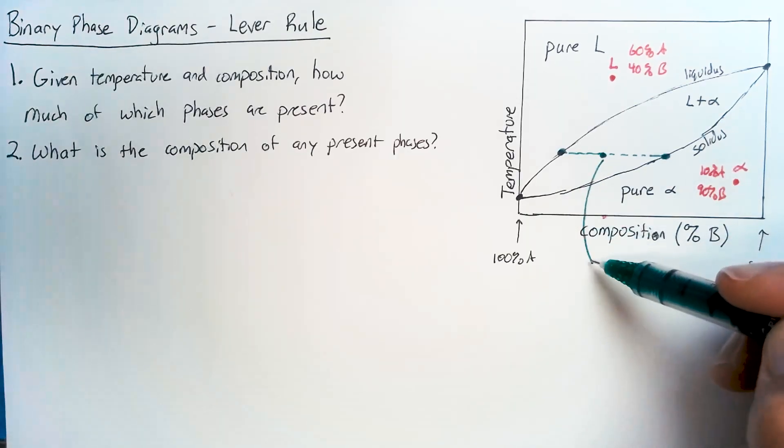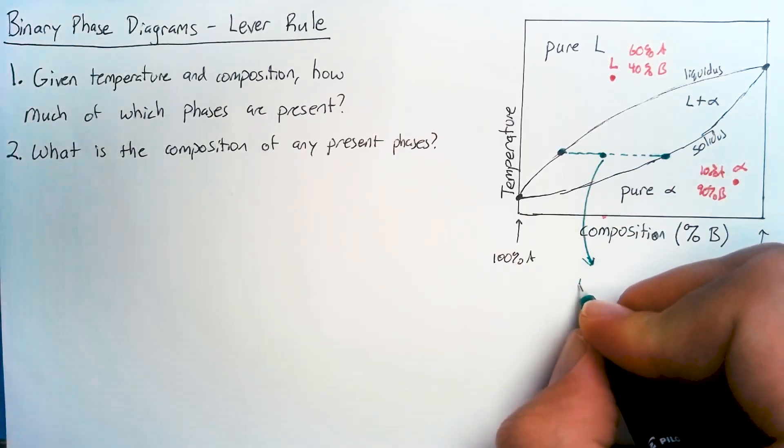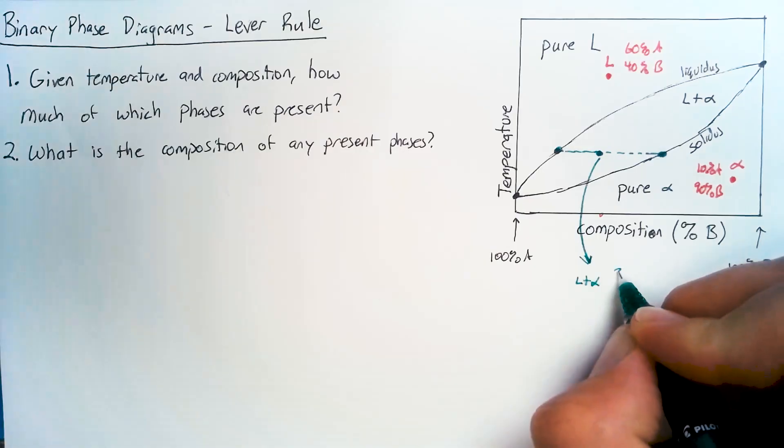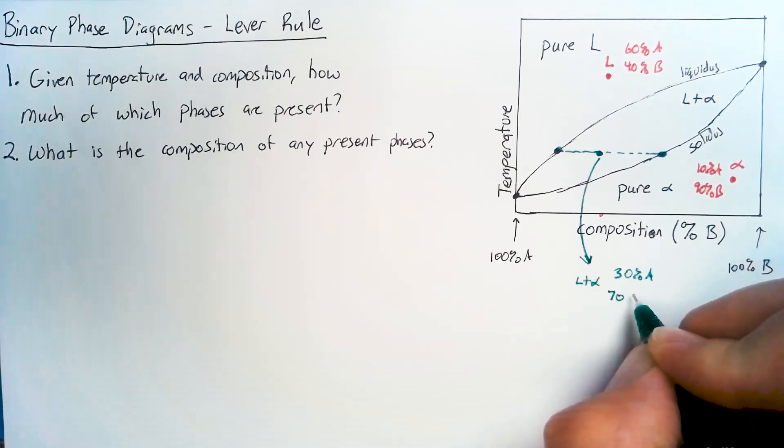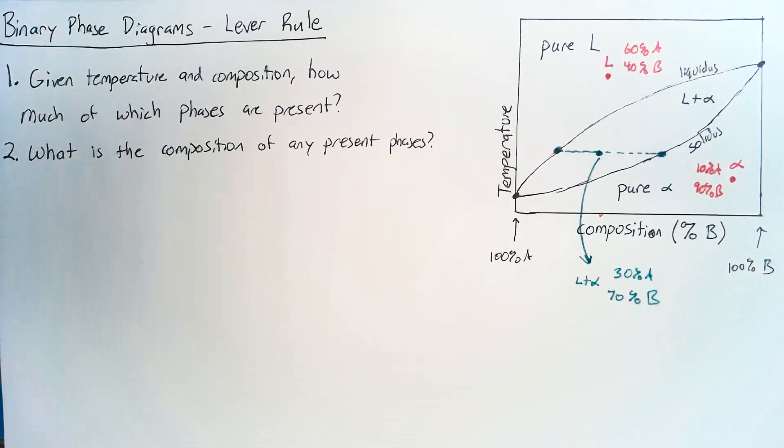So this composition of the overall liquid and alpha is going to be 70% A and 30% B.